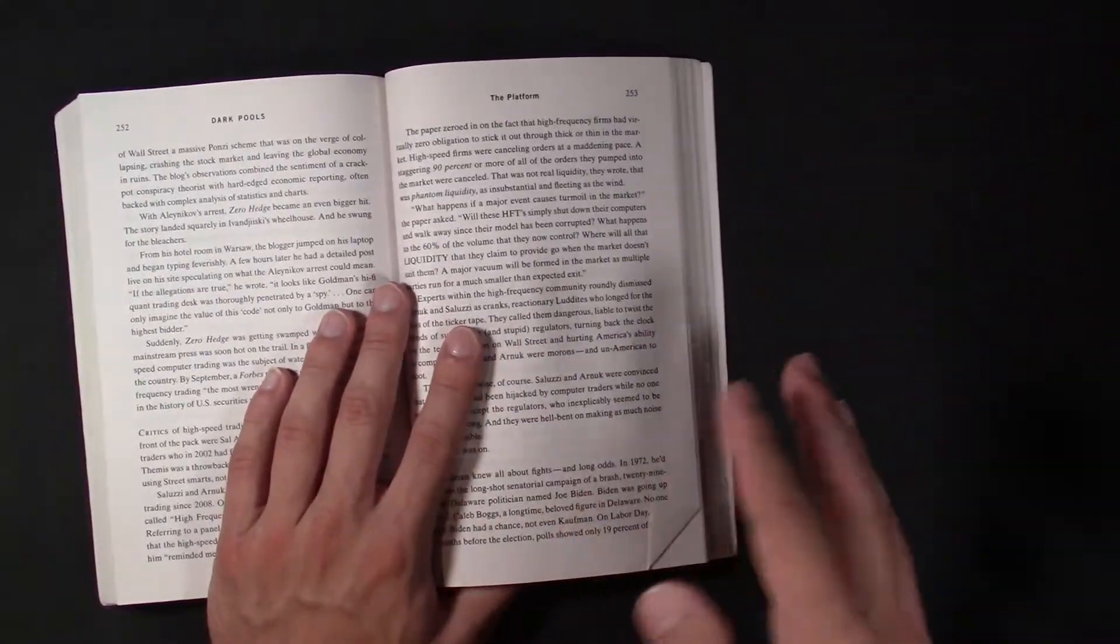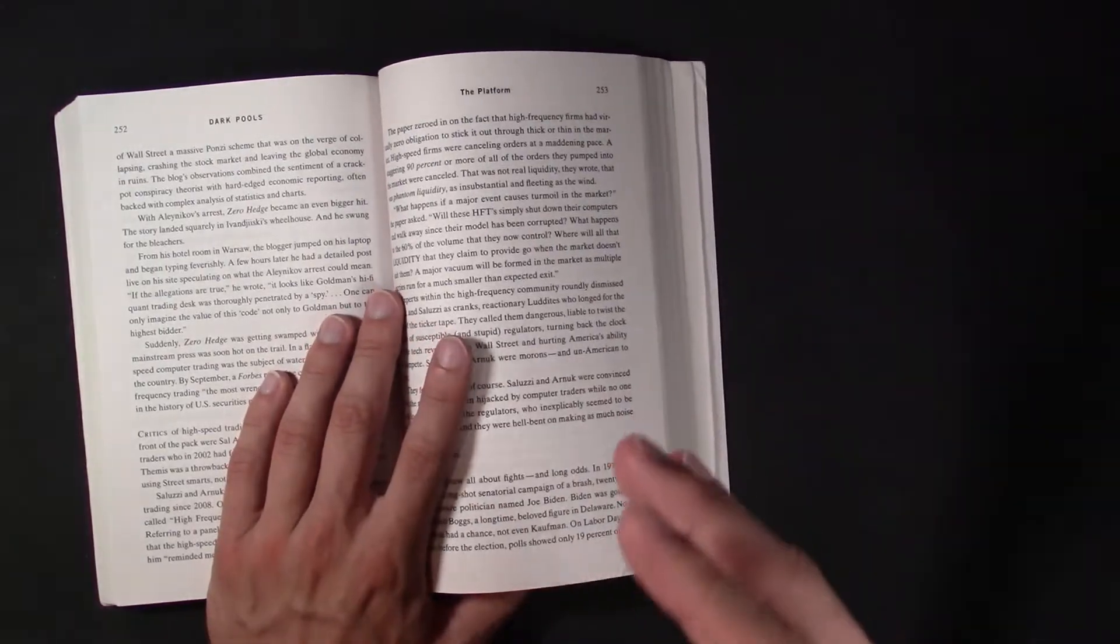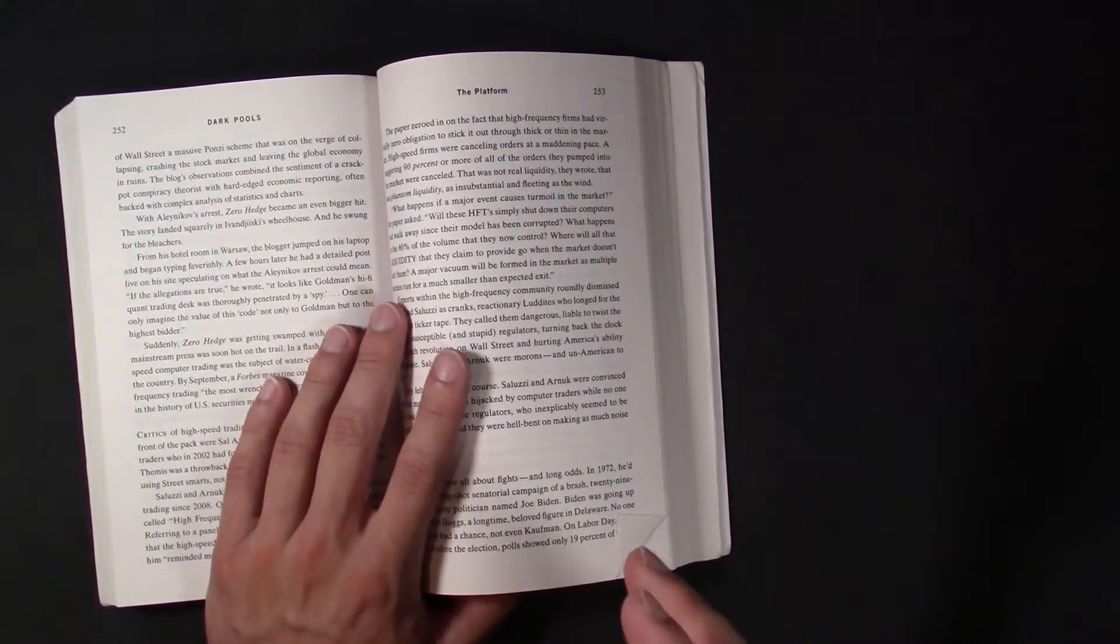And this is kind of the segue into how unpredictable these markets could become. Because he mentions it somewhere, but maybe we'll get to it. The flash crash in 2010, I think, or 2011.